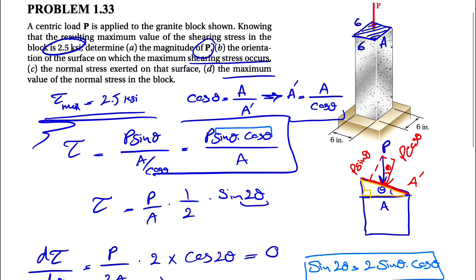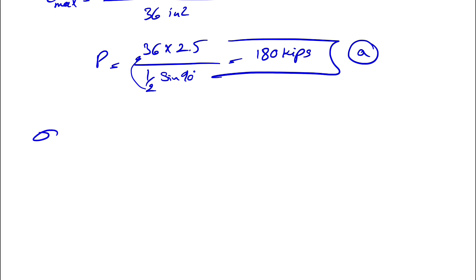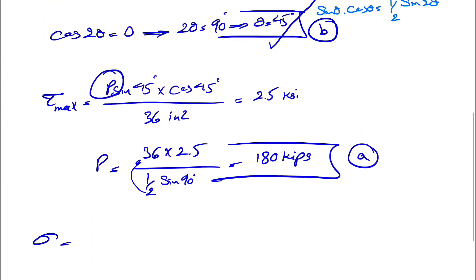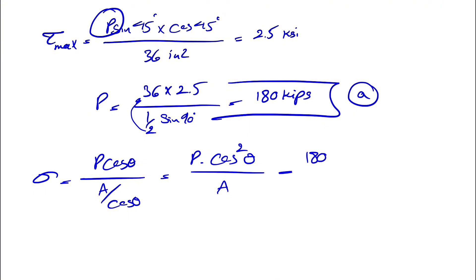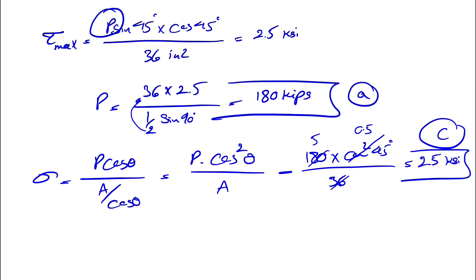We've found parts A and B. For part C, we need the normal stress on the inclined surface — the surface making angle theta with horizontal, which is A prime. The normal component is P cosθ, and the area is A prime = A / cosθ. So normal stress σ = P cos²θ / A = 180 × (cos²45°) / 36 = 5 × 0.5 = 2.5 KSI.